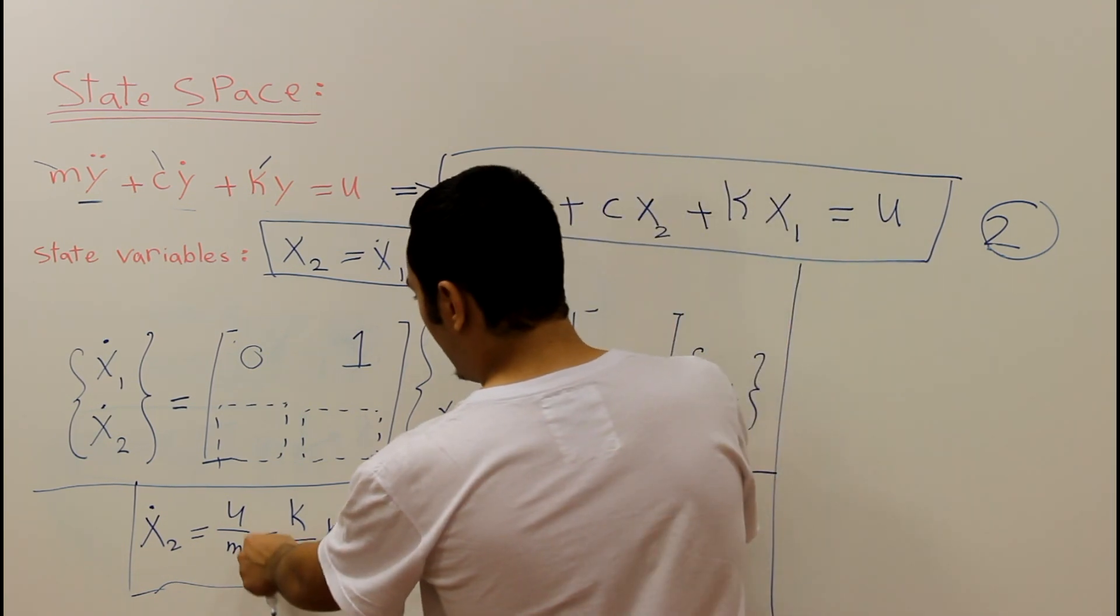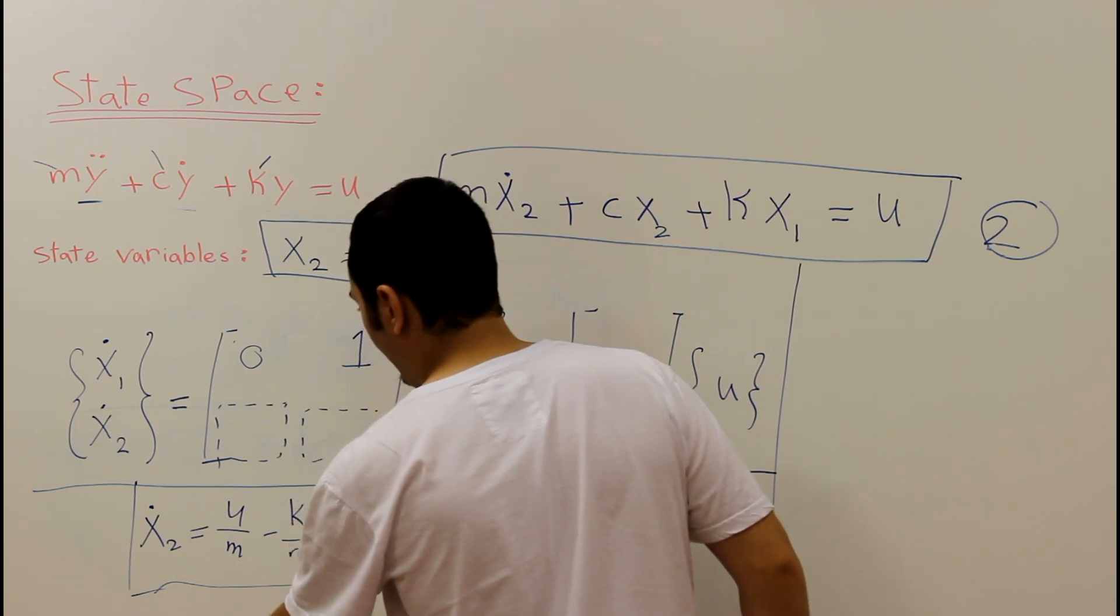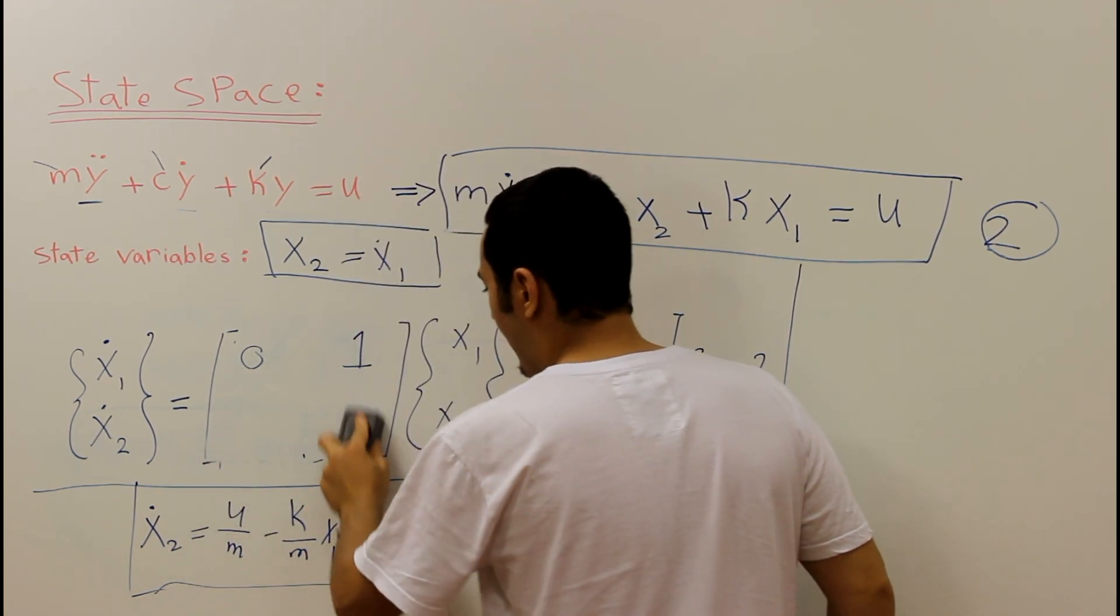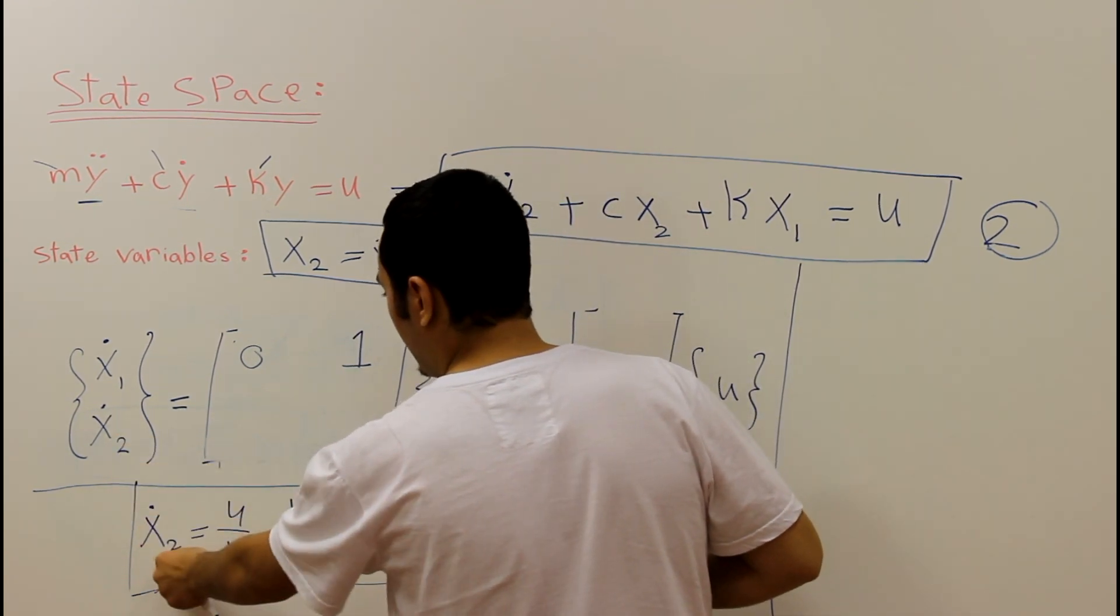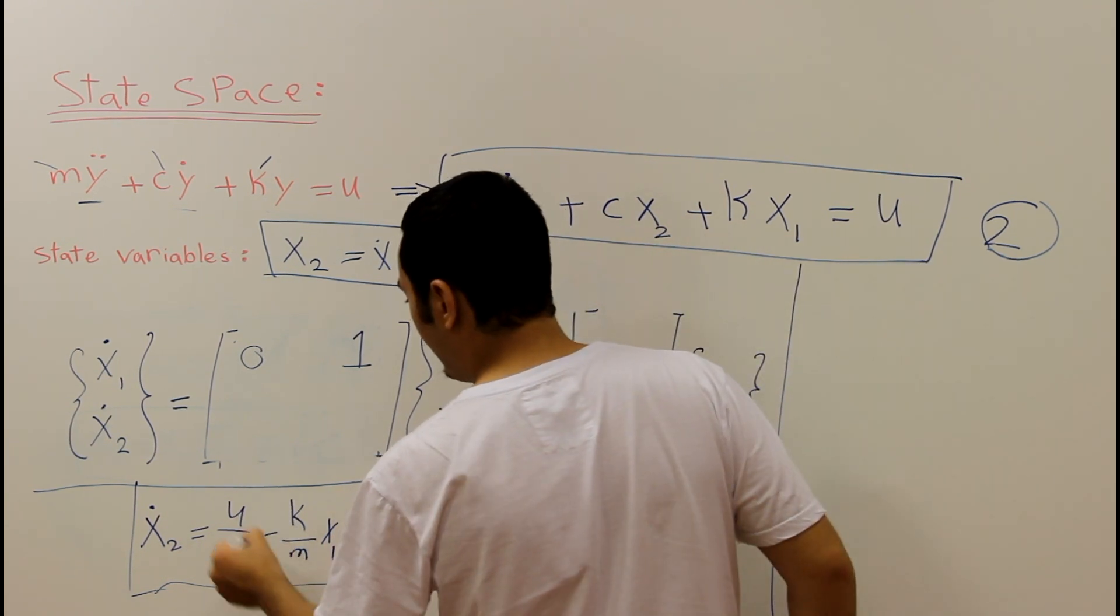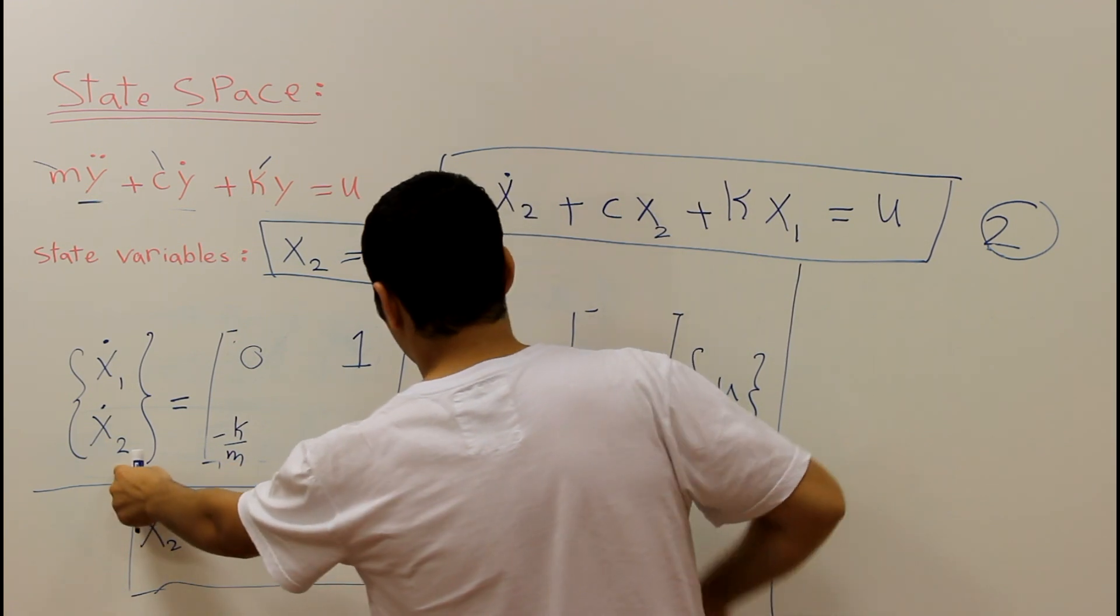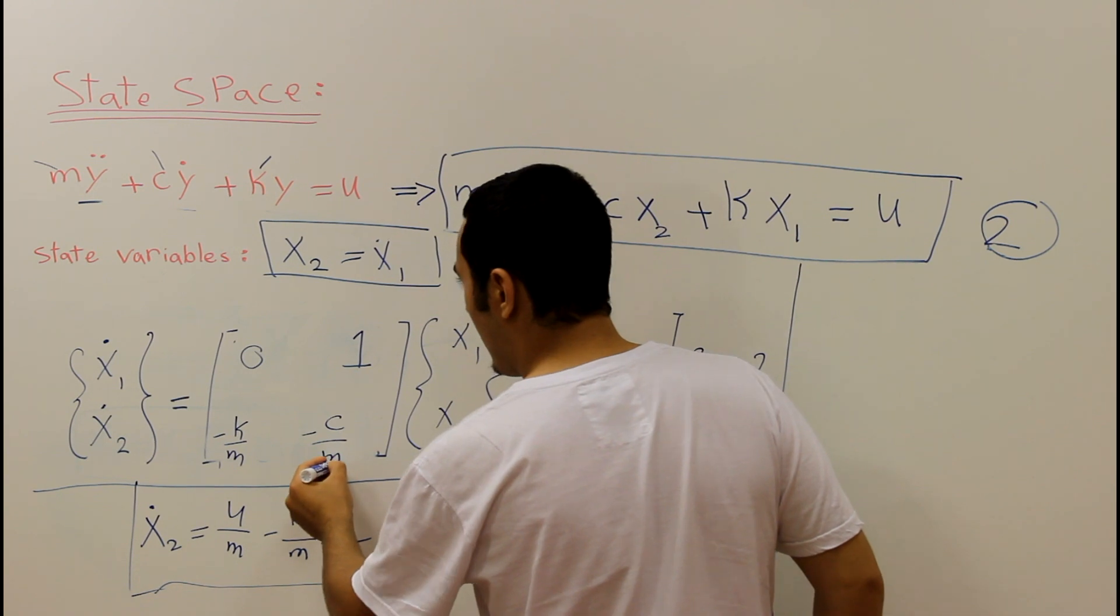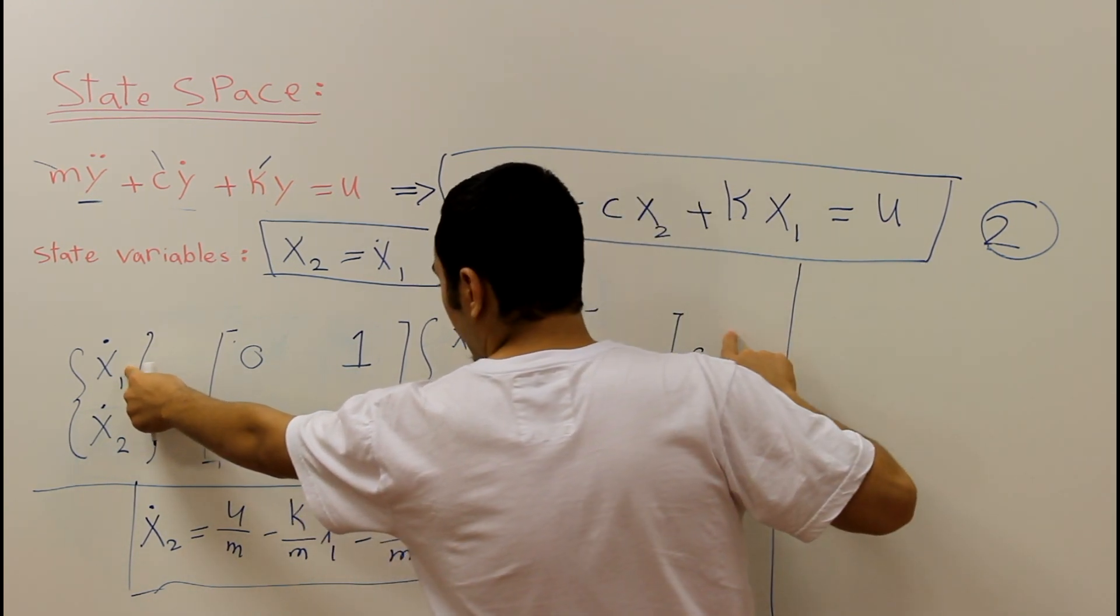Right now we can see in terms of x1 we have negative k over m. x2 dot in terms of x1 is negative k over m. x2 dot in terms of x2 is negative c over m.